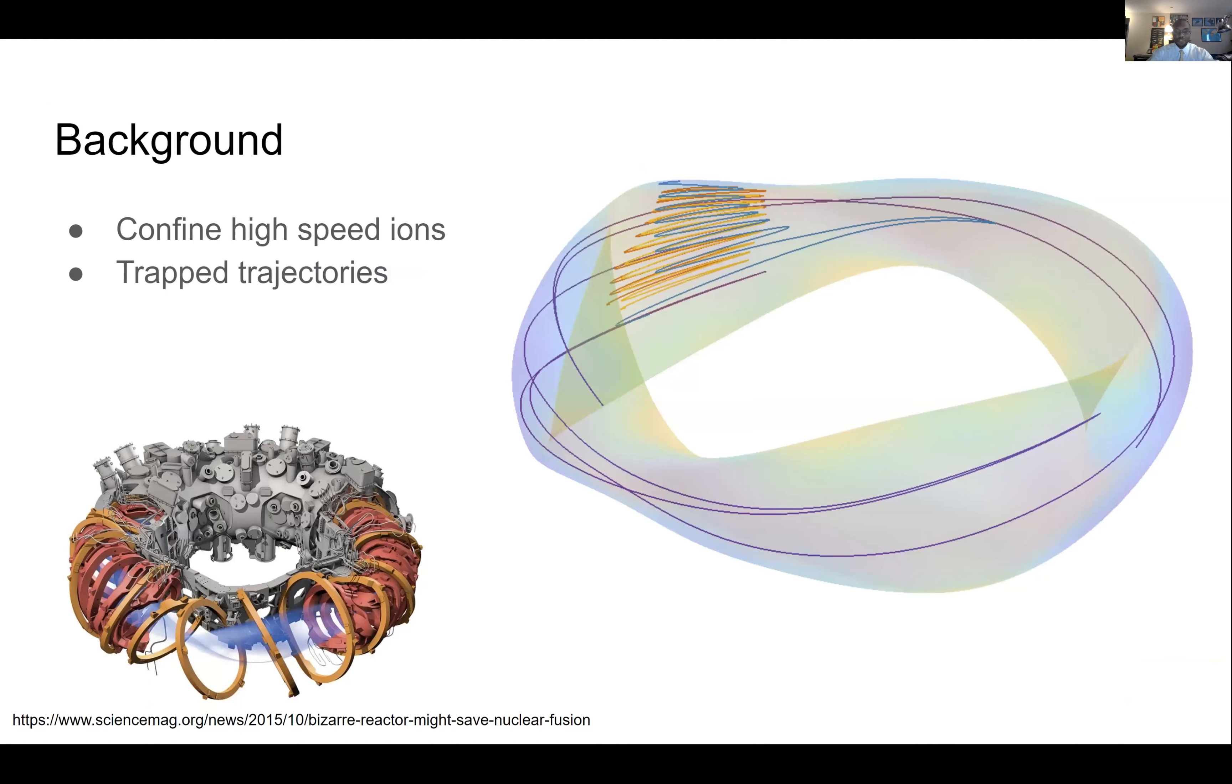So in a fusion reaction, we have a lot of high speed, high energy ions that are produced that the stellarator field has to confine. So in an ideal situation with a uniform field, the ions will proceed around the reactor with no trouble.